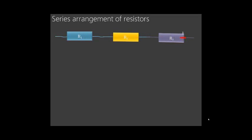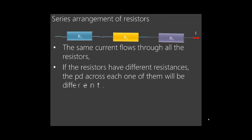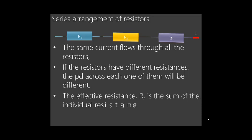In a series arrangement, the same current flows through all the resistors. Now if the resistors have different resistances, the potential difference (PD) across each one will be different. Remember from Ohm's Law: V = IR. So as long as R1, R2, and R3 are different, the potential differences across them will also be different.